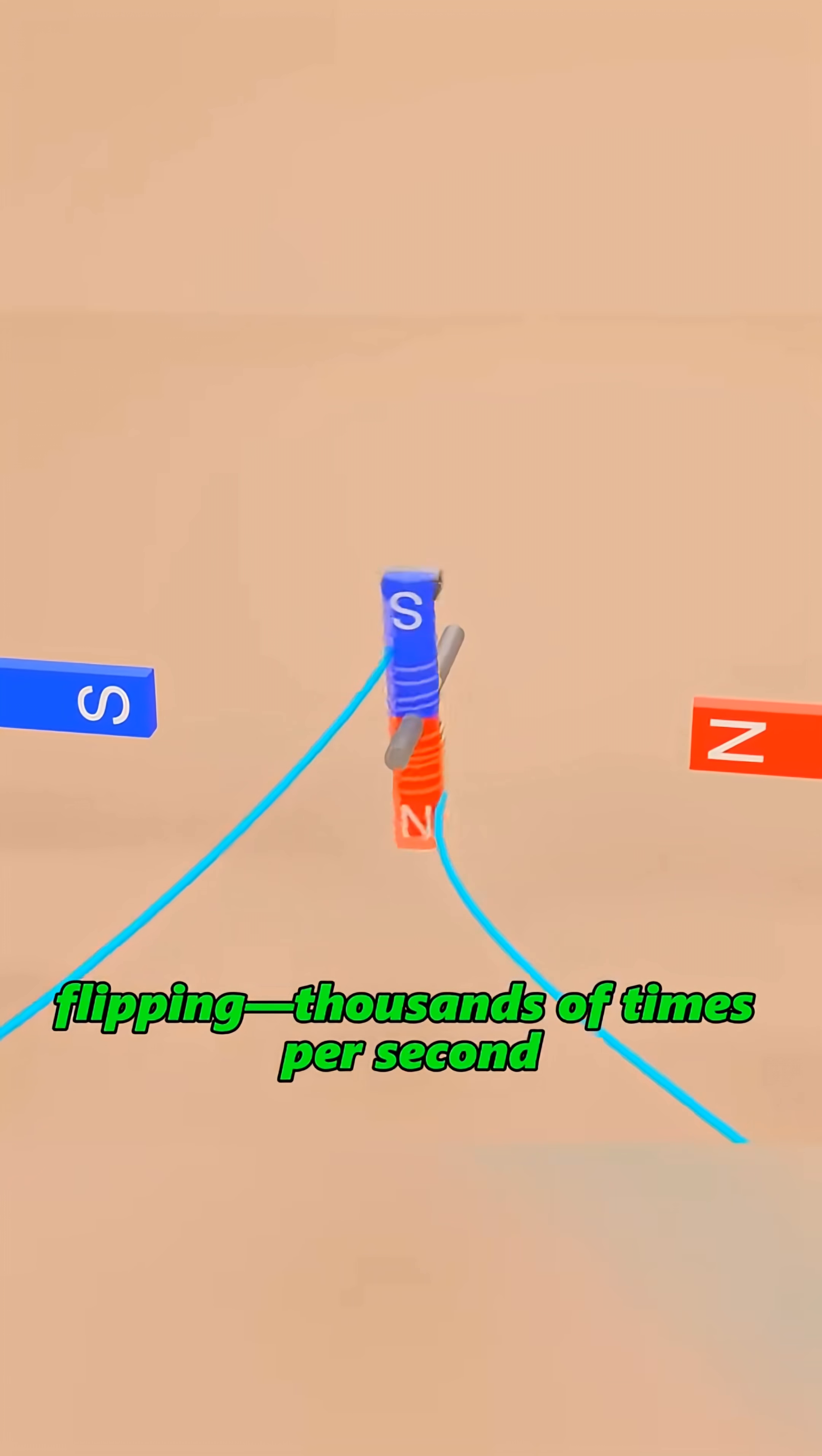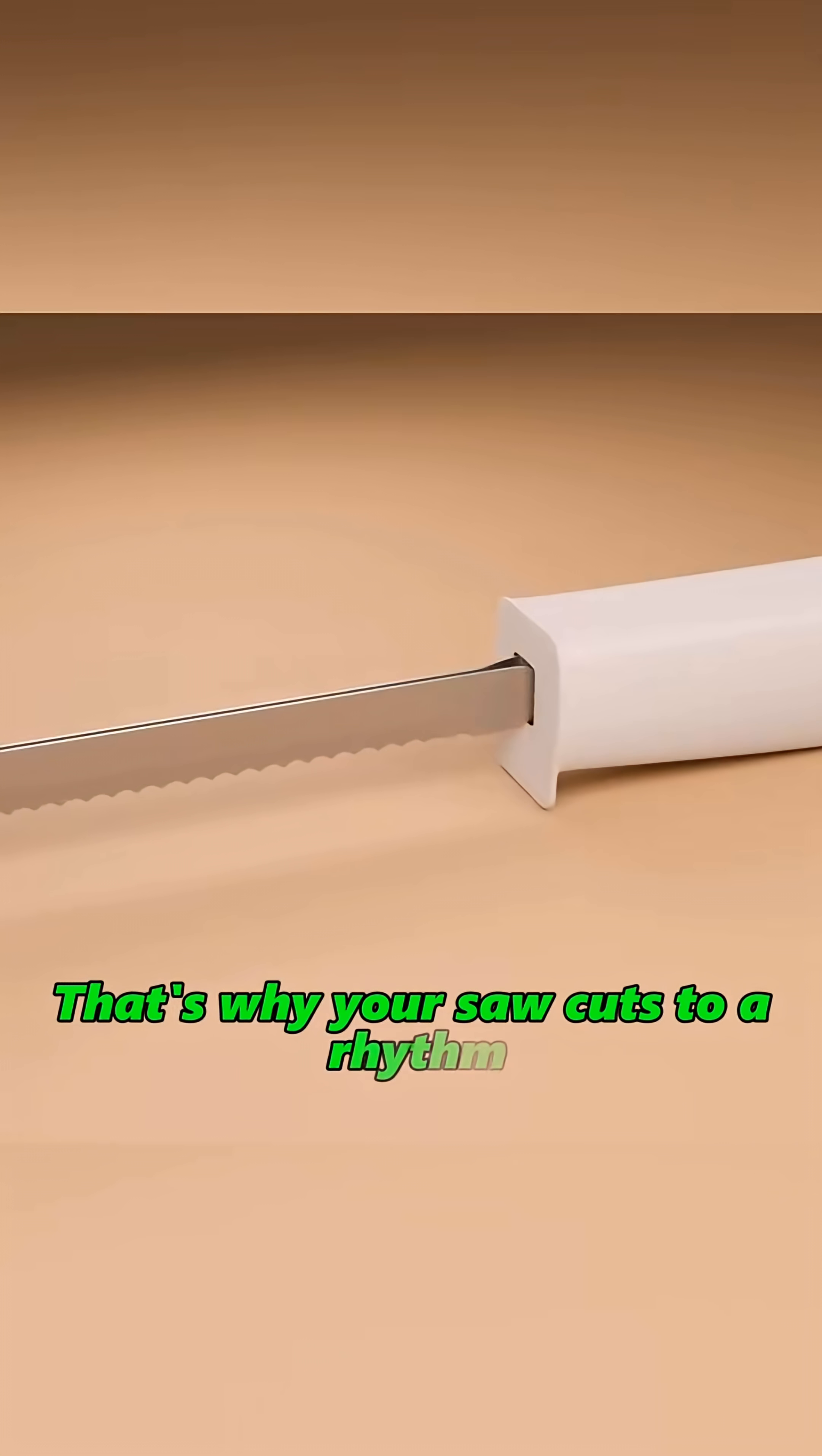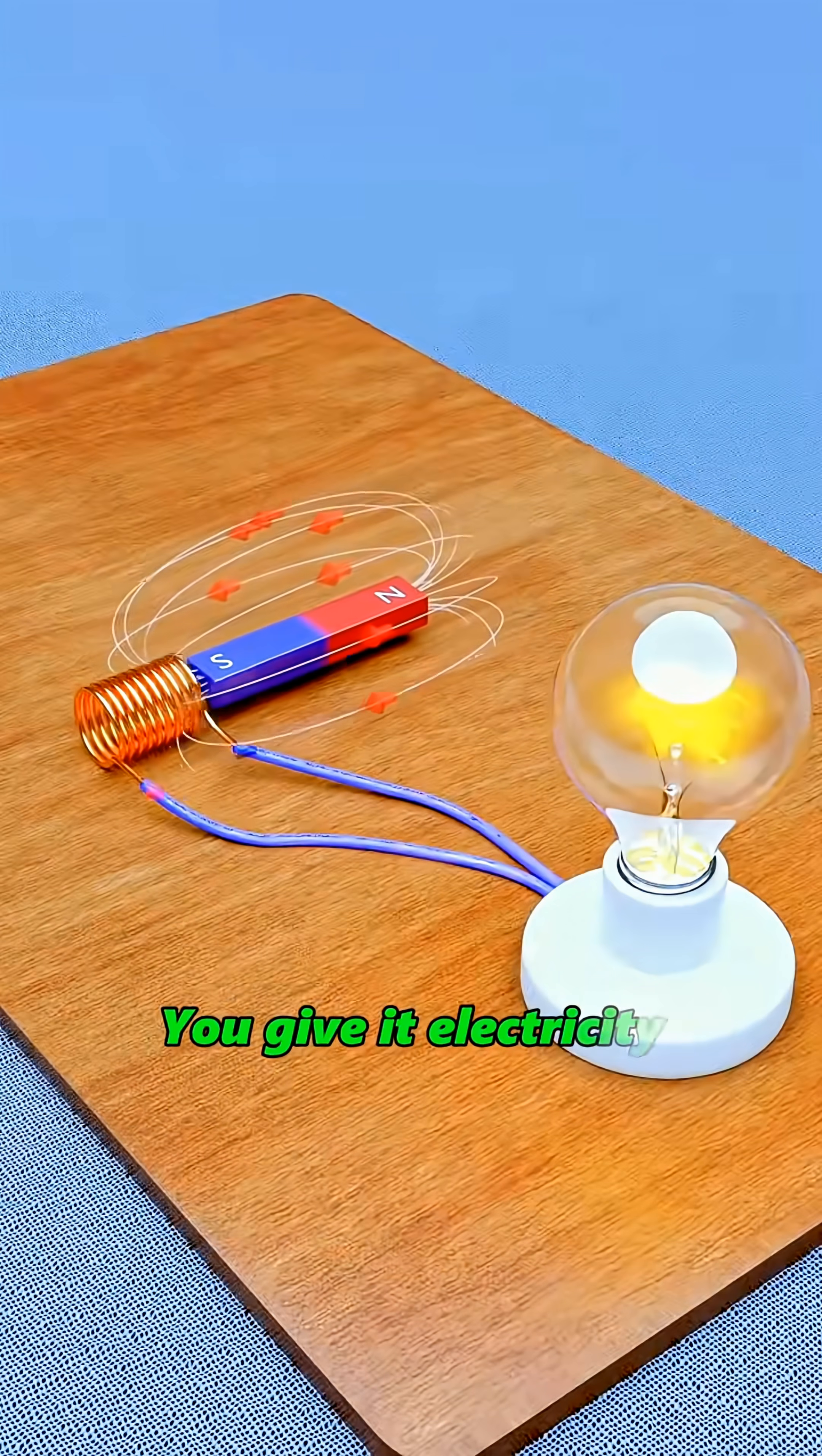Flipping thousands of times per second. But here's the truth: electricity creates magnetism, magnetism creates motion. That's why your toys dance, that's why your fan blows, that's why your saw cuts to a rhythm. It all comes down to an invisible swap between north and south. An electric motor is magic. It's a deal - you give it electricity.